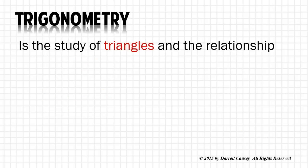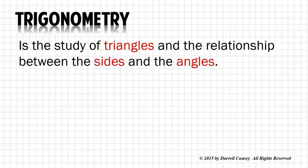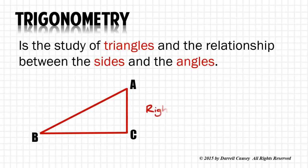So what is trigonometry? Trigonometry is the study of triangles and the relationship between the sides and the angles. Specifically we're going to talk about the right triangle.